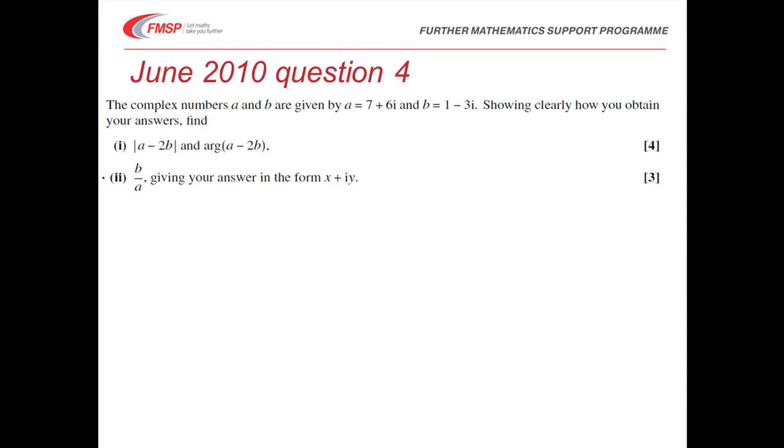So let's have a little look at part 1 then. So the modulus of A minus 2b. First of all we'll need to find what A minus 2b is. So A minus 2b is going to be 7 plus 6i minus two lots of 1 minus 3i which is 5 plus 12i.